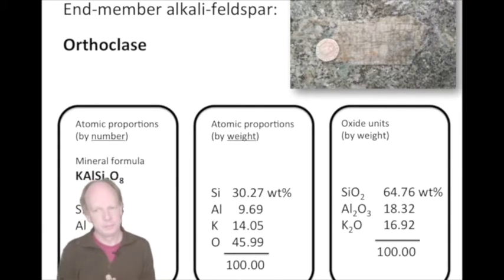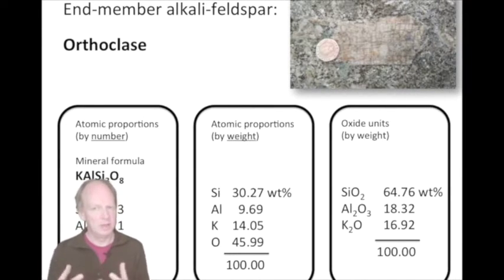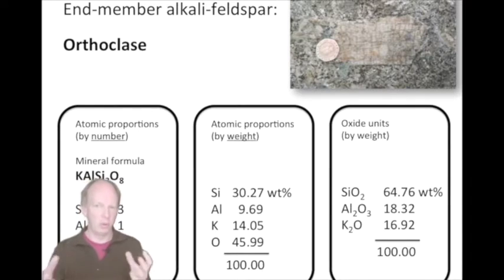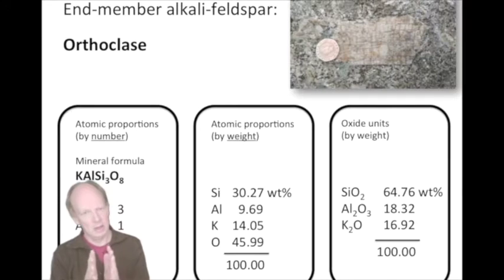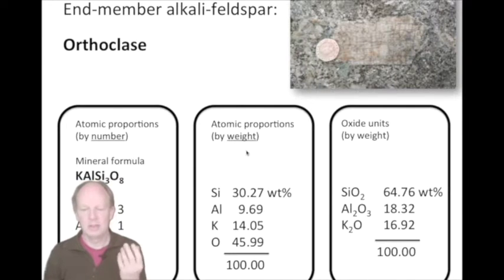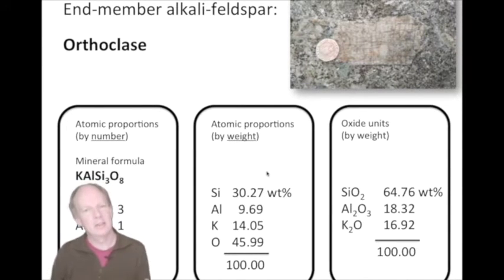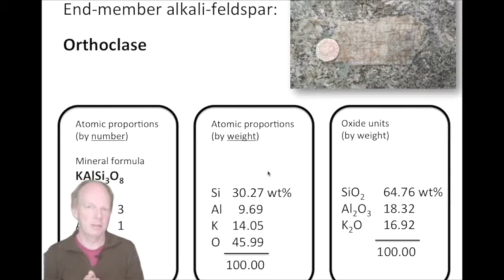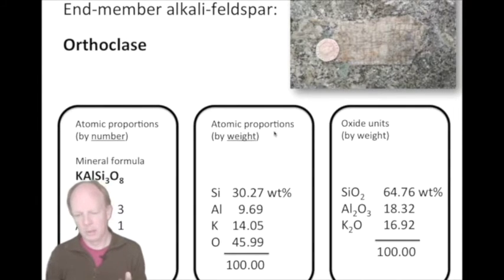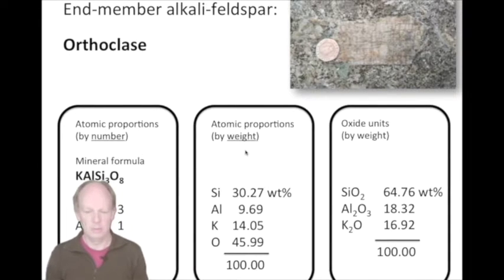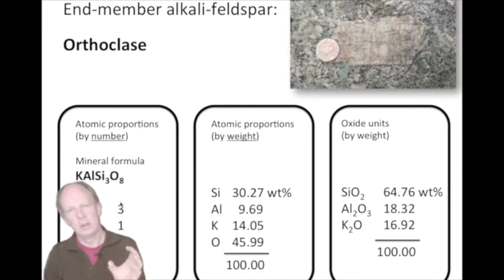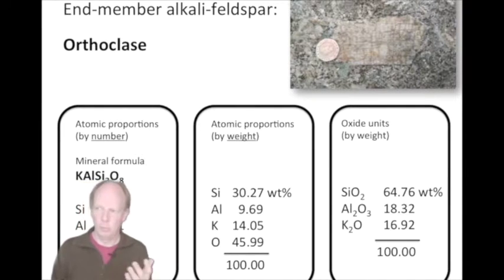Our XRF represents the compositions of the rocks taken in the field in terms of the atoms but by weight. So the second representation of a mineral or rock composition is the one actually used by our XRF — atomic proportions by weight. It's simply the number of atoms in a unit multiplied by their mass.